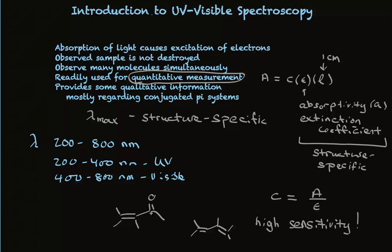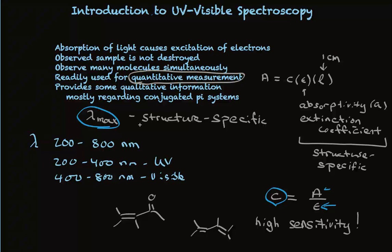There are two key pieces of data obtained from a UV-visible spectrum: concentration and lambda max. The concentration is obtained by measuring the absorbance when we know the extinction coefficient. The lambda max is simply measured by looking at the spectrum. Let's look at a spectrum to get a quick feeling for what these are like.